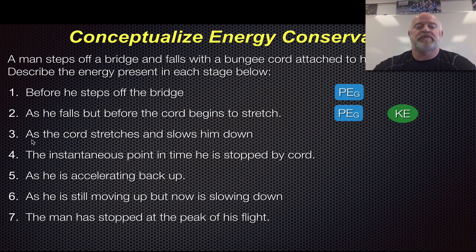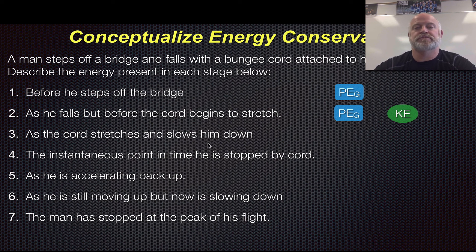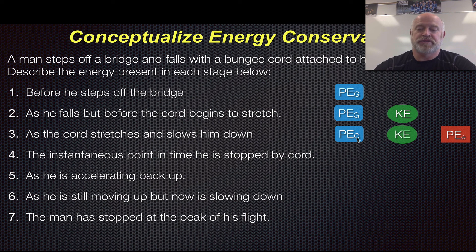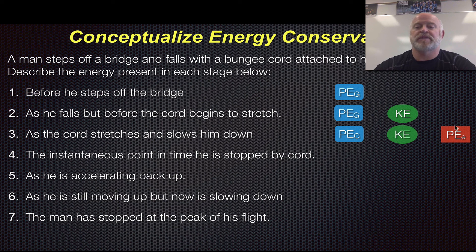Part three: we finally have the cord stretching and it slows him down. Notice it doesn't say it stops him, it just slows him down. So what's all present here now? We still have gravitational potential energy — otherwise he hit the ground and he's dead. The kinetic energy is there because even though he's slowing down, he's not stopped. And now we get some elastic potential energy also.